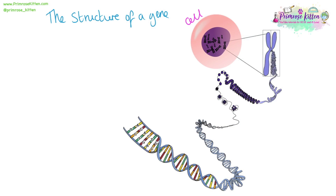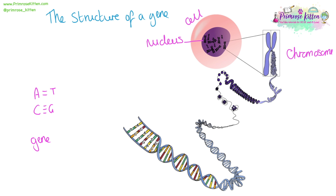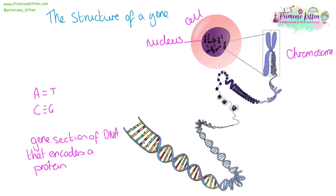DNA within cells is stored in the nucleus. It is tightly packed into chromosomes. Within a gene we have bonding of nucleotides A to T and C to G, and this sequence of letters makes up the gene. A gene is any sequence of DNA that is going to encode for a protein.